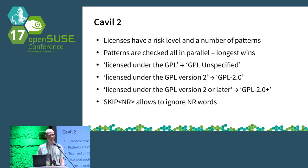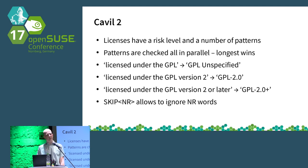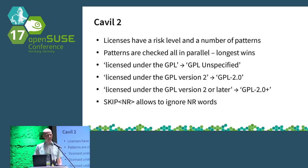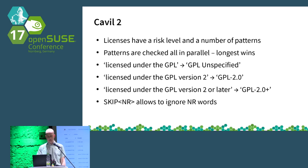All the patterns are checked in parallel on the sources, and the longest version wins. So if the README says 'licensed under the GPL,' we have a license called GPL Unspecified, which needs more research. If the text says 'licensed under the GPL version 2,' then we name this GPL-2.0, meaning only version 2. But if it says 'licensed under the GPL version 2 or later,' then we add a plus to the license, because then we can mix it with GPL-3.0. The patterns also allow a magic keyword called 'skip' that allows ignoring an amount of words within the license text.